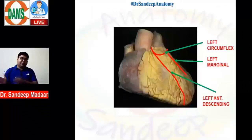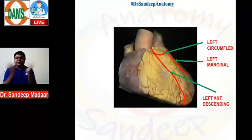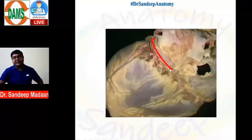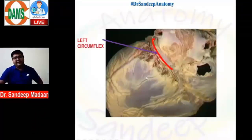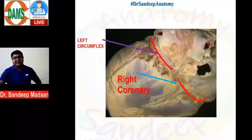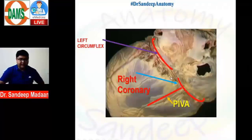If we flip the heart and look at the posterior surface, we can see the further course of the left circumflex. This portion of the left circumflex comes on the posterior part and it anastomoses with the right coronary. The right coronary comes up to this point, the left circumflex comes up to this point, and then there is anastomosis between these two. This artery is called PIVA.